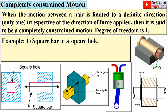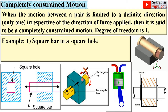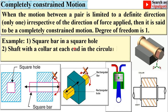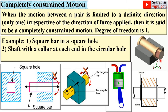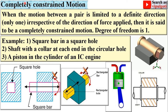Here is the front view and side view — you can use this figure in examinations. The rotational motion is not possible because it is a square bar in a square hole, so only one translational motion is possible, giving single degree of freedom. Next, a shaft with a collar at each end: in the circular hole only one rotational motion is possible. A piston in the cylinder of an IC engine has only one reciprocating motion on the vertical axis. So for completely constrained motion, the degree of freedom is one and only one.